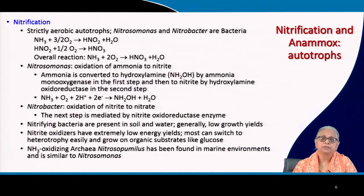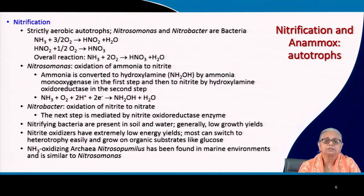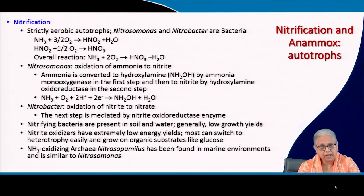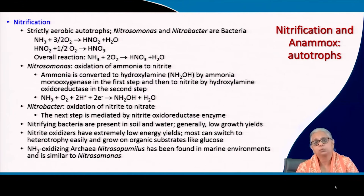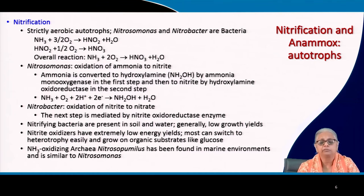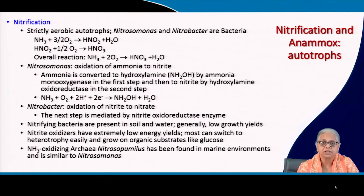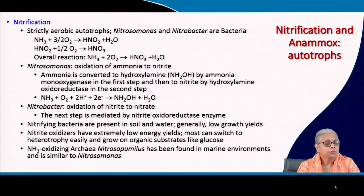Let us now look at another element: nitrogen. Nitrogen is very interesting because it exists in several different oxidation states. You have inert nitrogen gas in the atmosphere that is not bioavailable, and you have ammonia, nitrite, nitrate, and organic nitrogen — all bioavailable forms. We are going to look at two major processes: nitrification and anamox. Both groups of microbes involved in these processes are autotrophic bacteria.